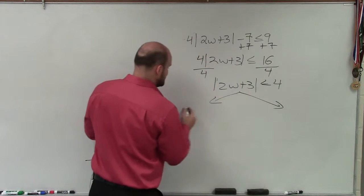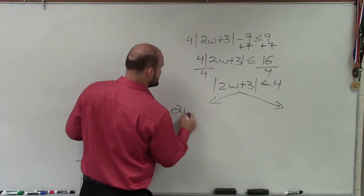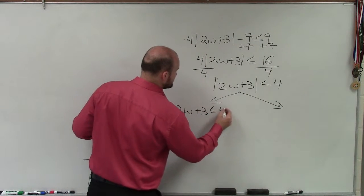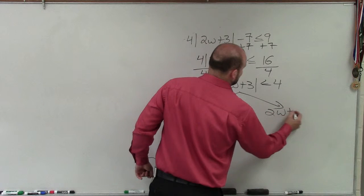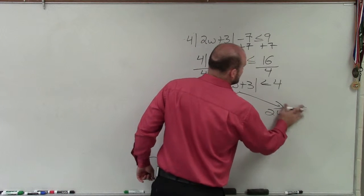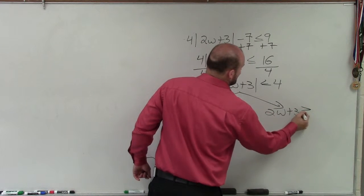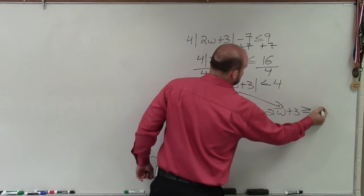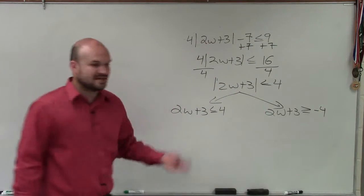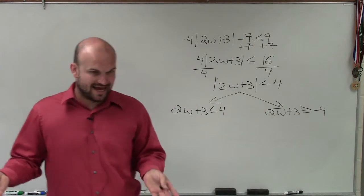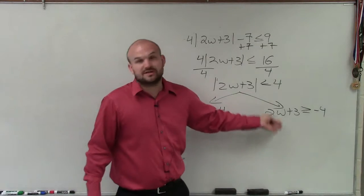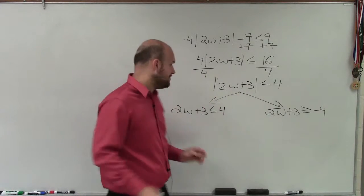So I set up my two cases: 2w plus 3 is less than or equal to 4, and 2w plus 3 is greater than or equal to negative 4. Remember, we're setting up our two cases — we've got to do the positive and the negative. And when we create that negative case, we've got to make sure we flip the sign.